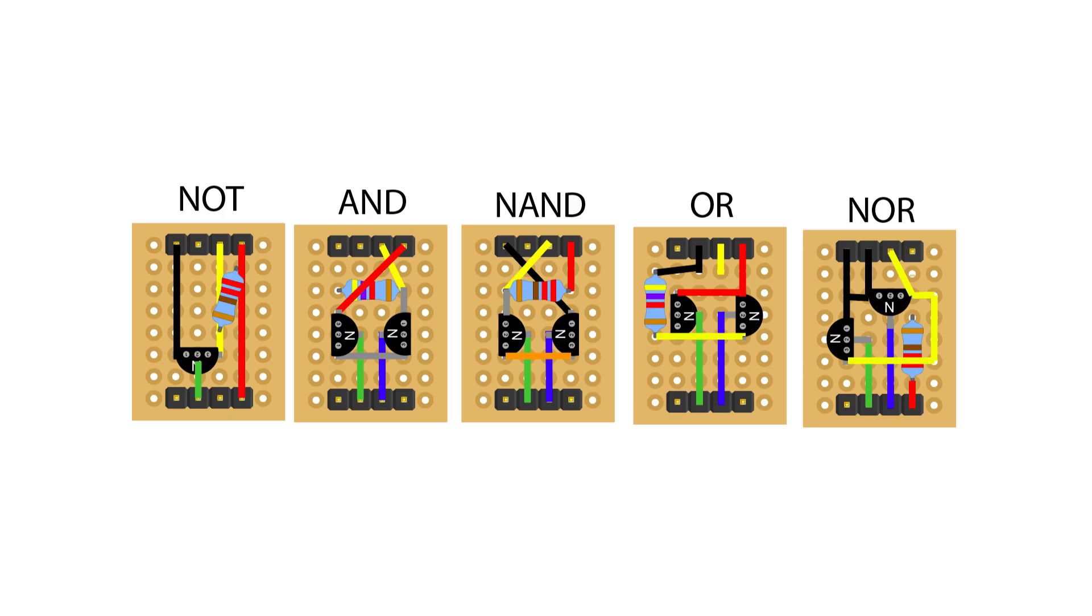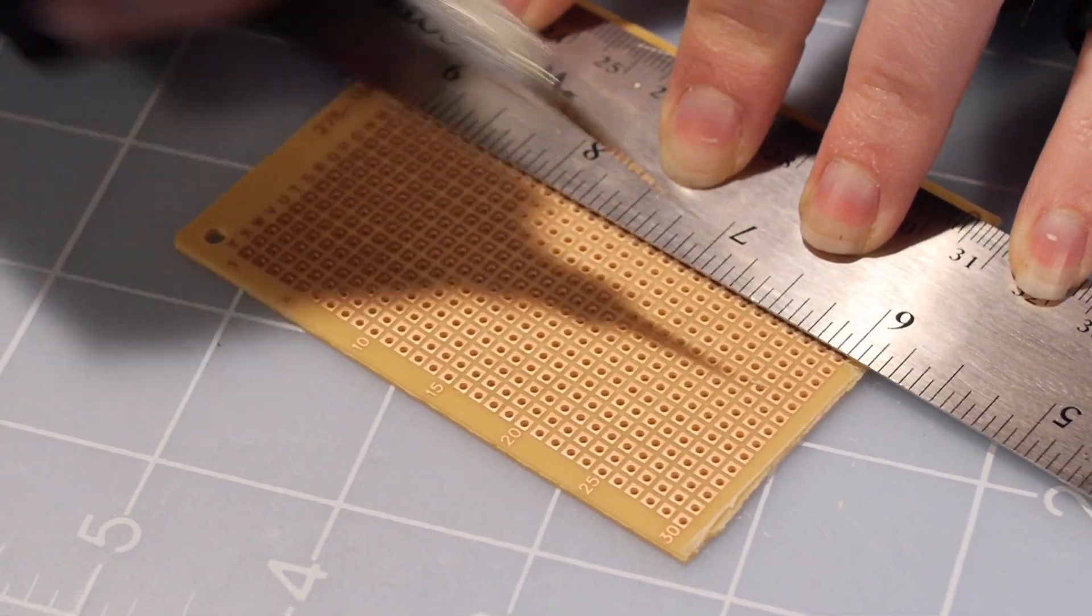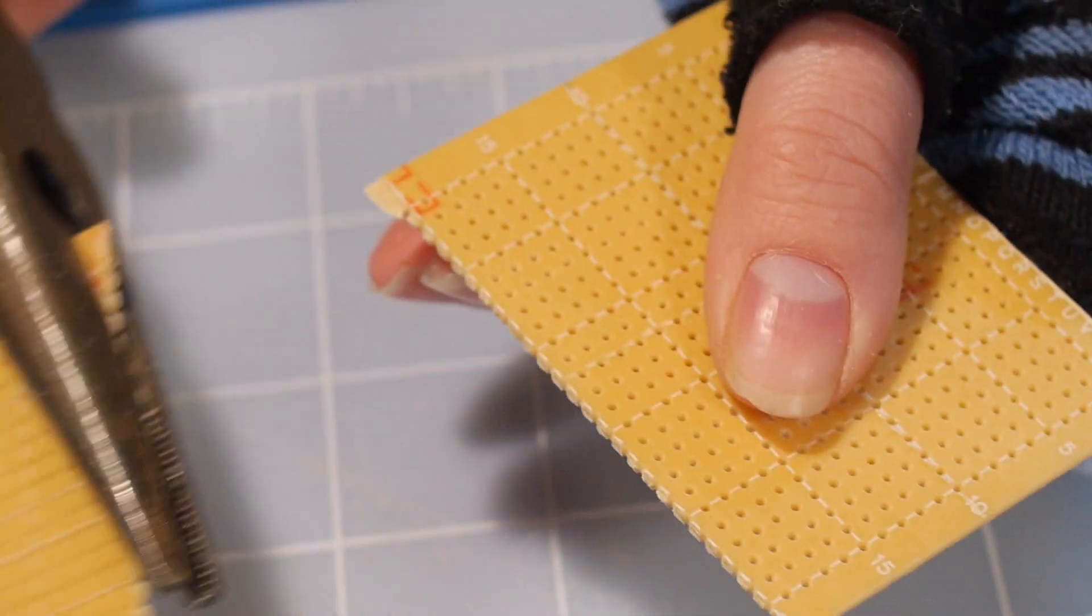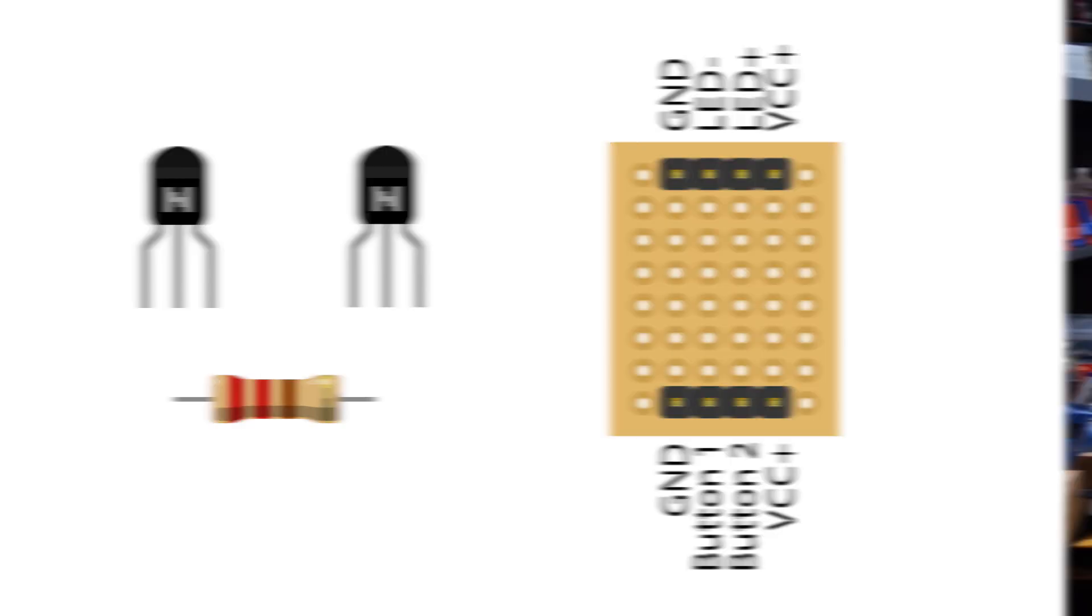I've digitally planned out all five gate boards and figured that they need to be about six holes by eight holes. You can make them by taking larger boards, scoring them, and breaking them apart. This leaves enough room for the two transistors, a resistor, and four header pins at the top and bottom for inputs and outputs. Not all pins will be used, but I put power and ground on both sides for convenience.